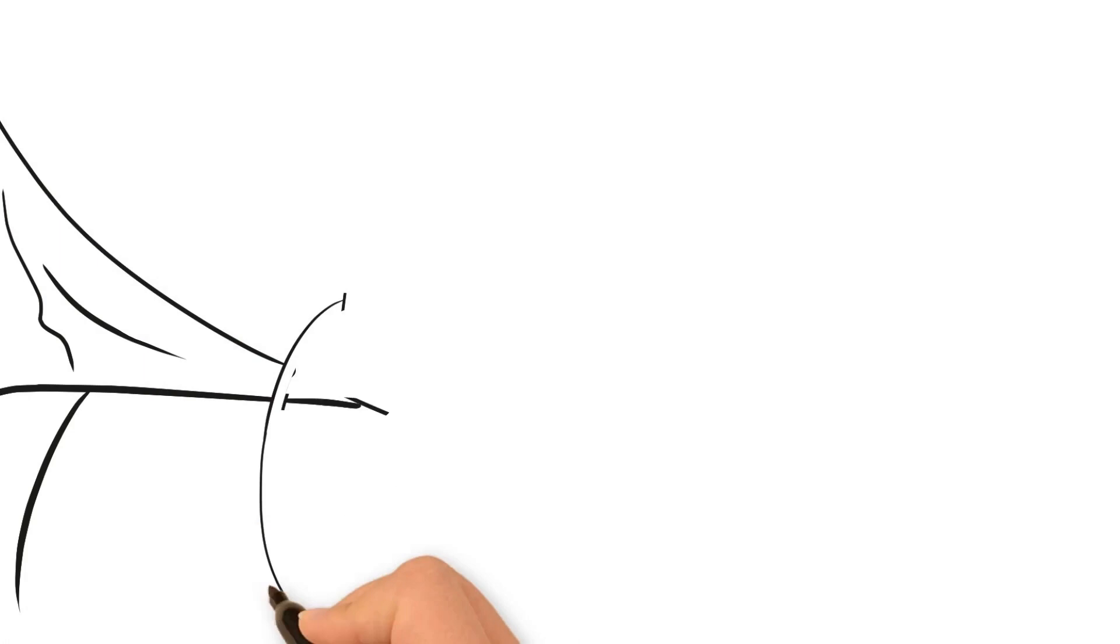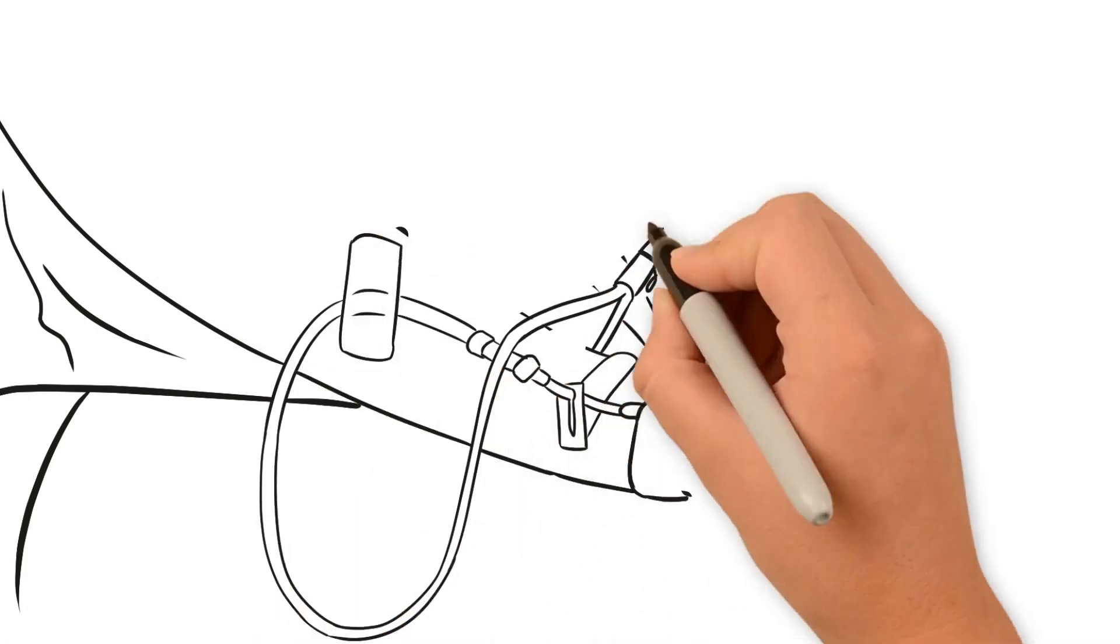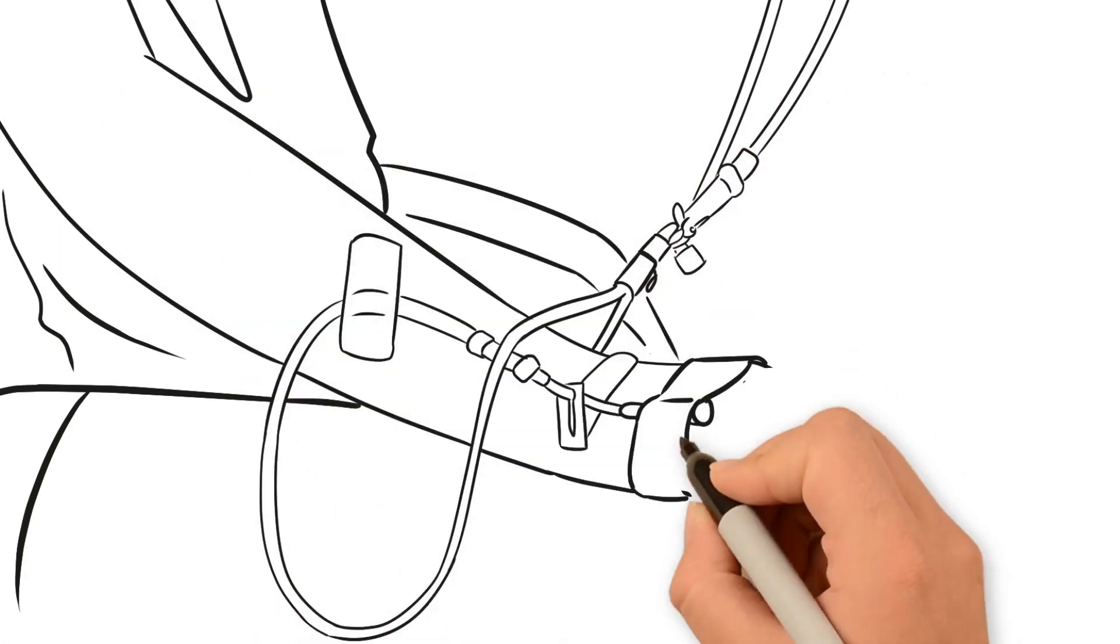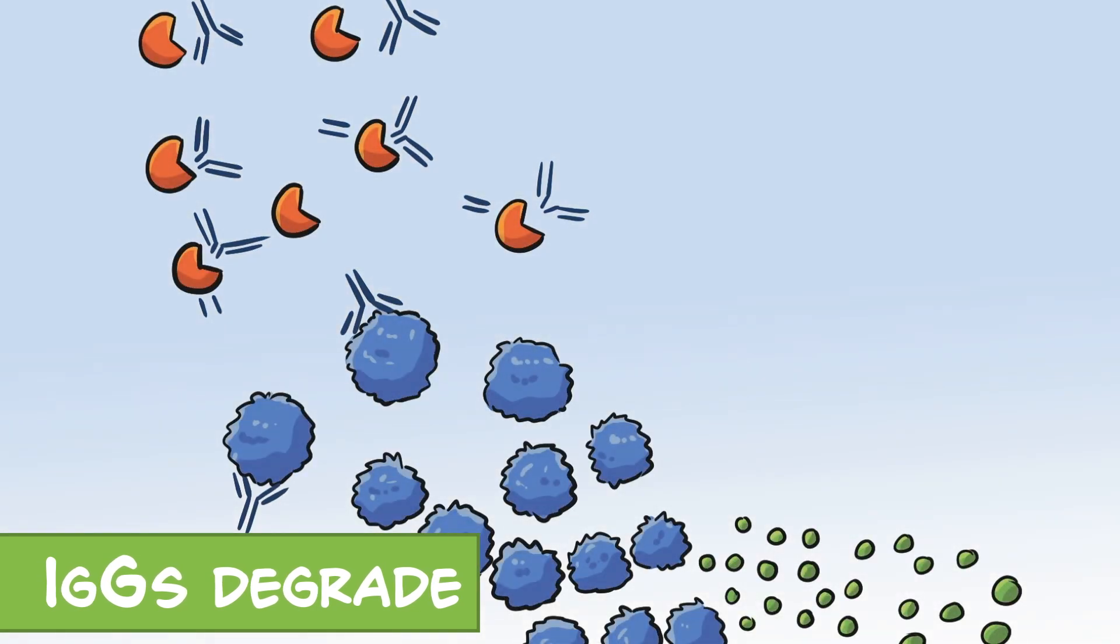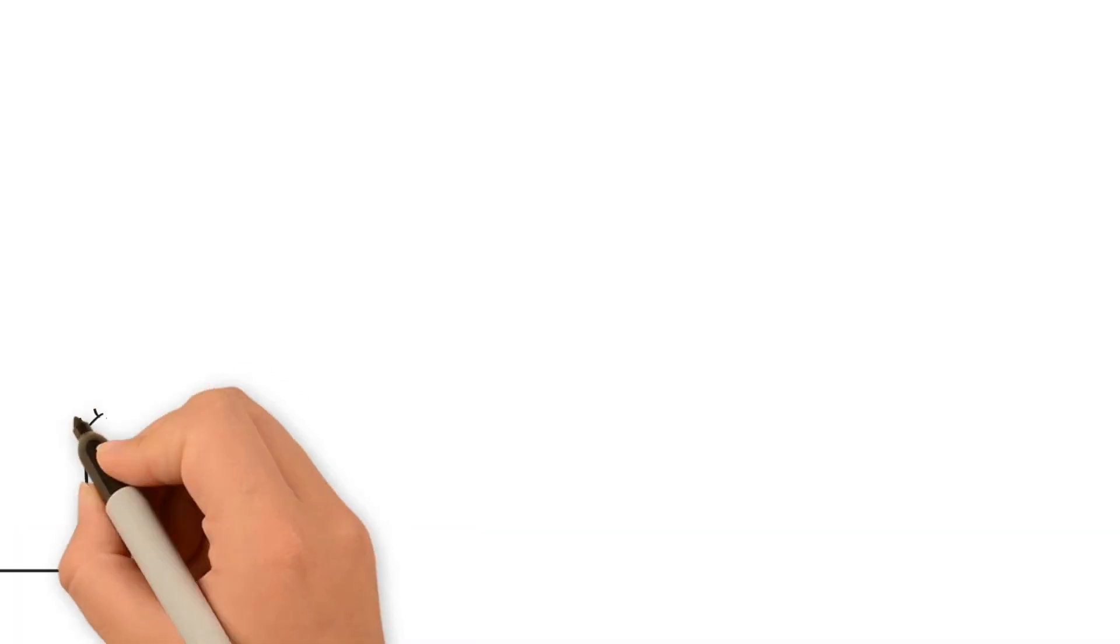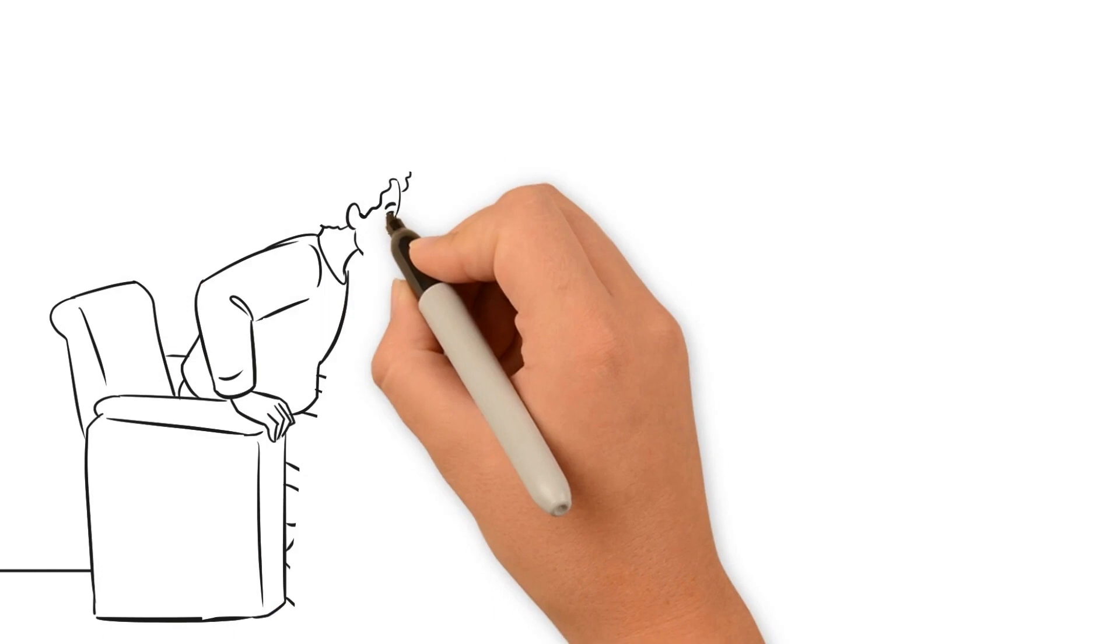An FCRN blocker works by binding to FCRN protein receptors, so there are few spaces for IgGs to bind to FCRN. When IgGs can't be recycled, they are degraded. So blocking FCRN reduces IgGs,